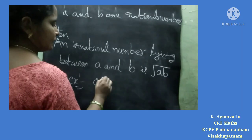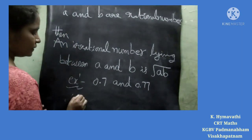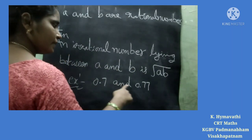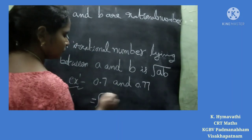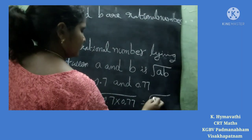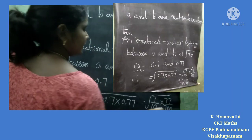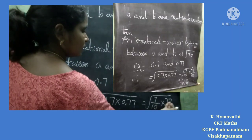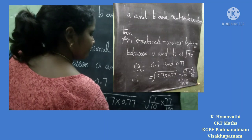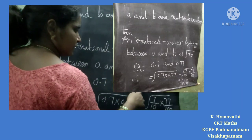For example, take 0.7 and 0.77. An irrational number lying between 0.7 and 0.77 is root of 0.7 times 0.77, which equals root of 7 by 10 times 77 by 100. Simplifying, we get root of 77 by 1000, which equals root of 11 by 10. This is an irrational number lying between 0.7 and 0.77.